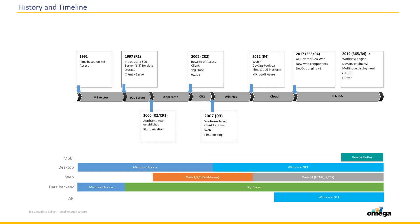Looking at the timeline of AppFrame and Omega development over 30 years: it started with Microsoft Access as both client and server, then migrated to SQL Server still with Access as the frontend. Then WinForms and Microsoft .NET were introduced on the frontend, still with SQL Server as the backend. Web went through ASP.NET WebForms before transitioning to Vanilla Web Technology with HTML, JavaScript, and CSS. In the latest era, the API was developed with Microsoft .NET, mobile with Google Flutter, and hosting moved to Microsoft Azure.